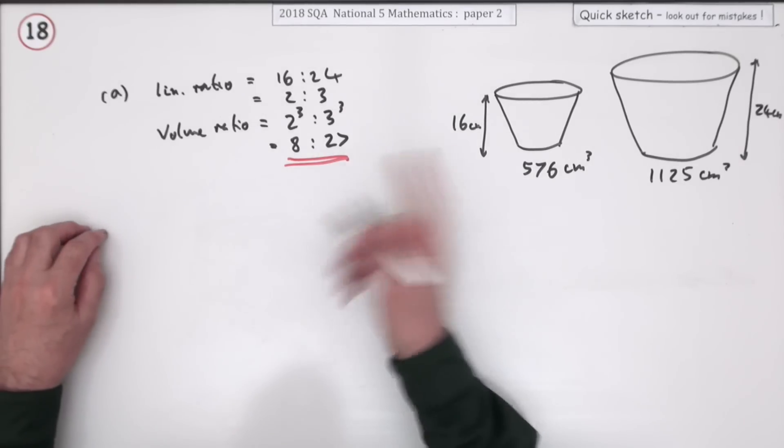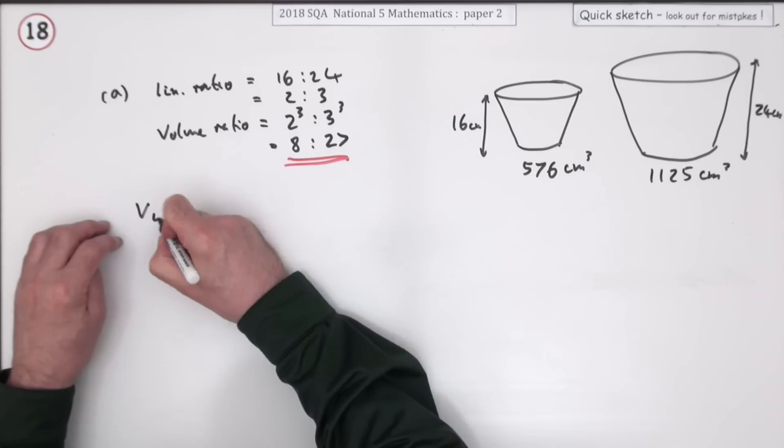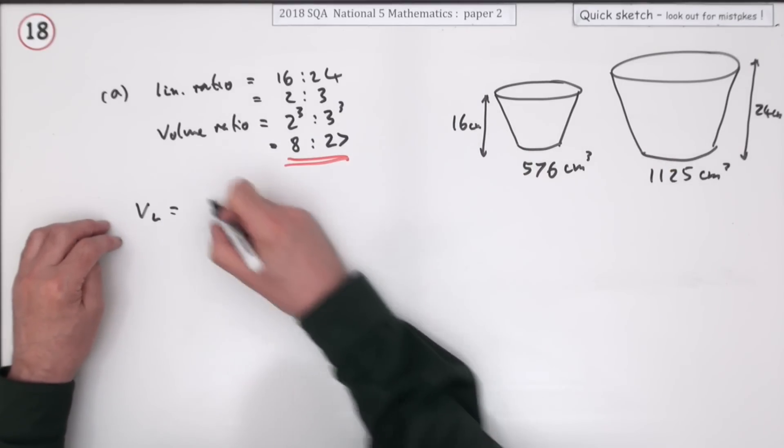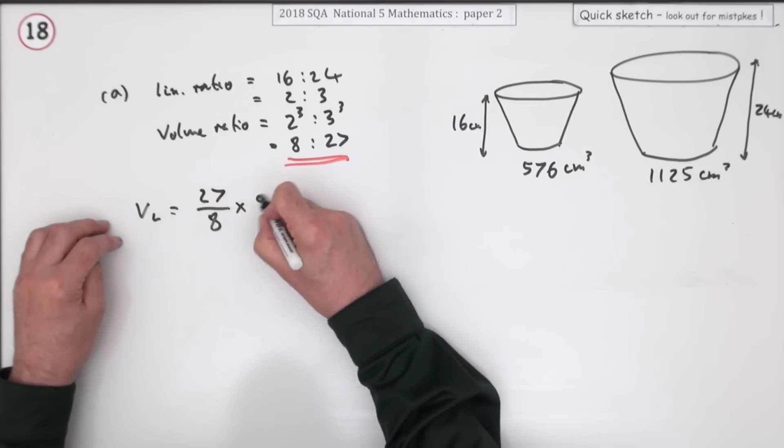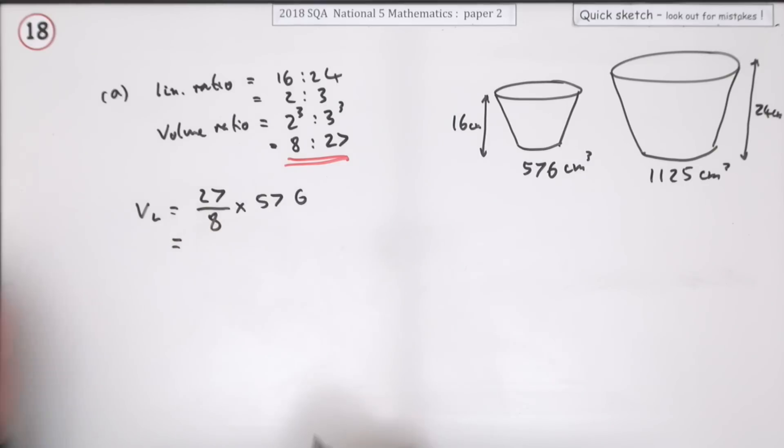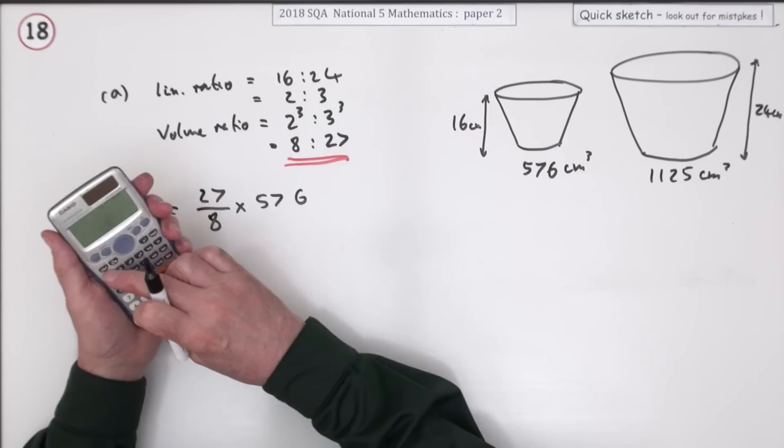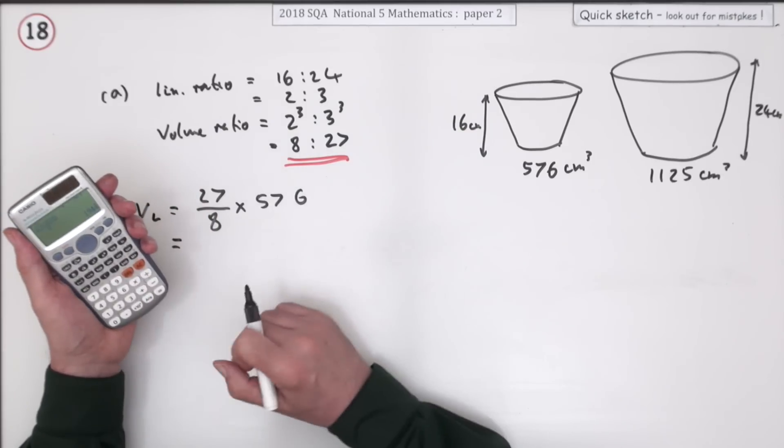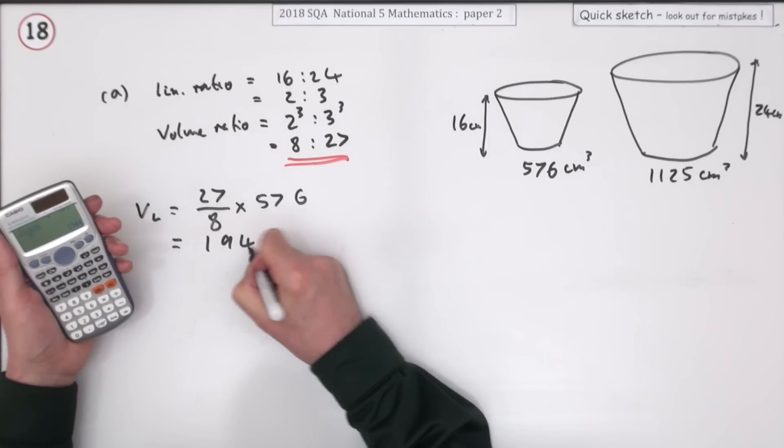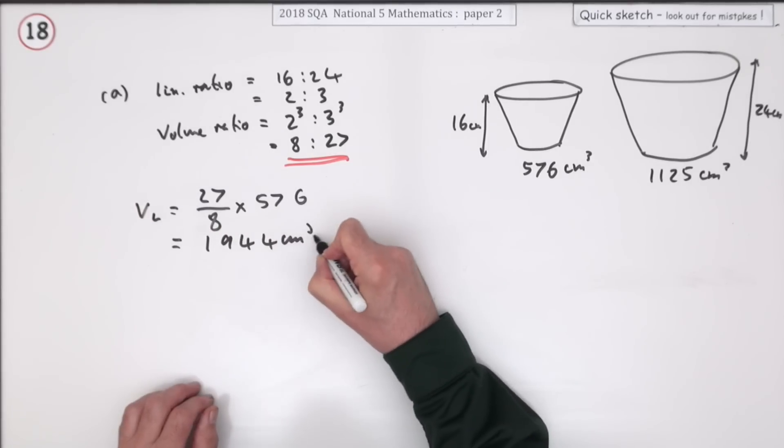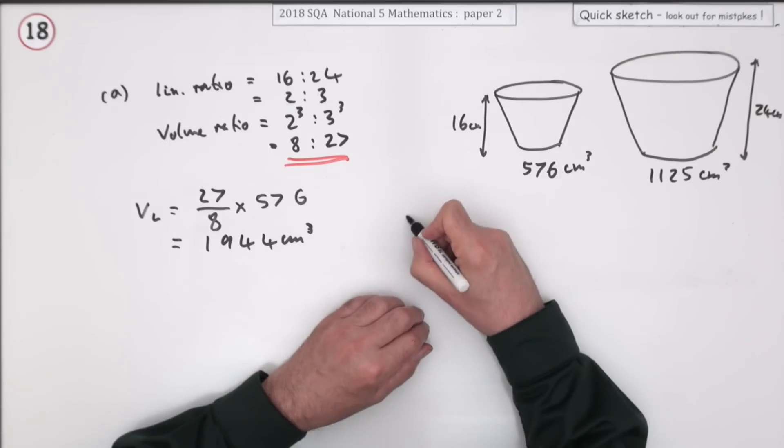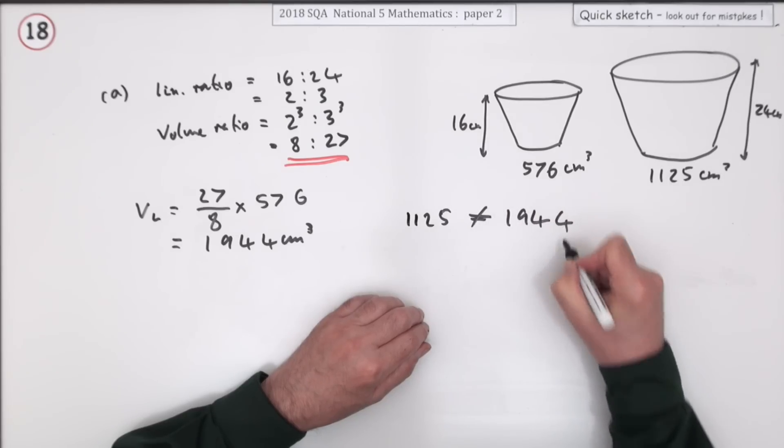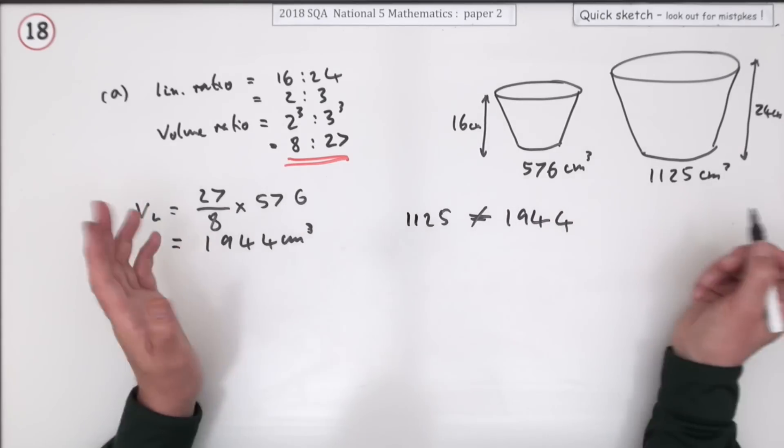However, if you aren't happy doing that, you could have worked out the volume of the large one. If this is the ratio, the large one should be 27 over 8 times 576, which is 1944. So now you can say 1125 is certainly not equal to 1944. That's a lot less, which means as before, they are not similar.